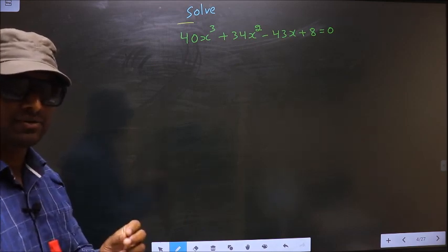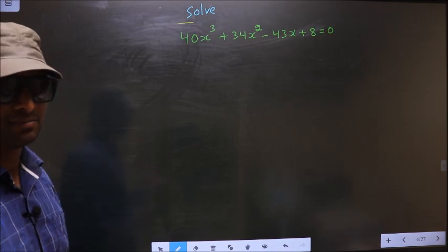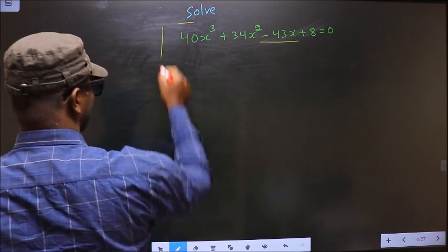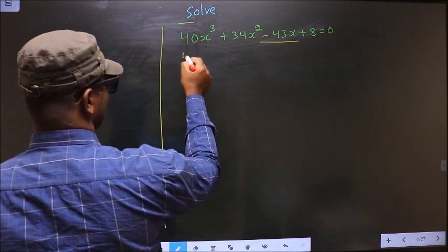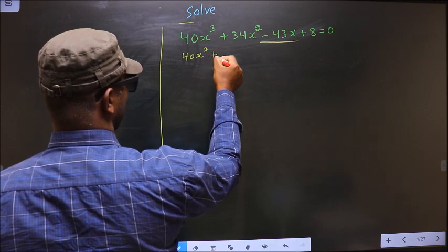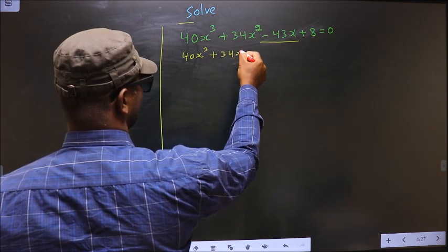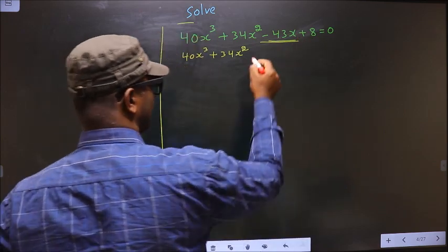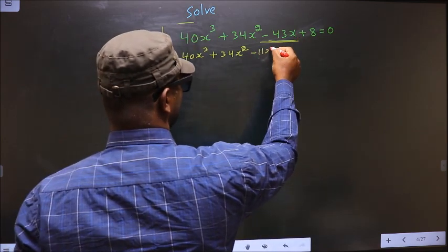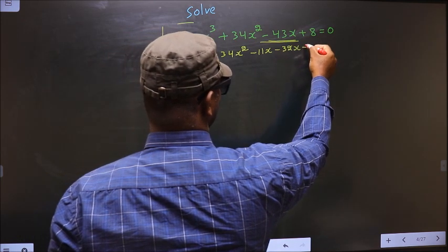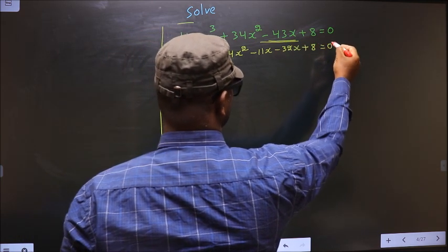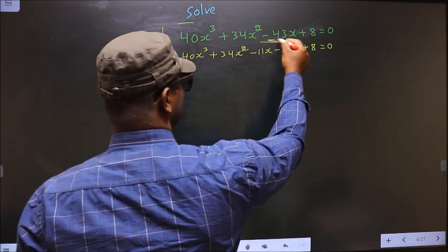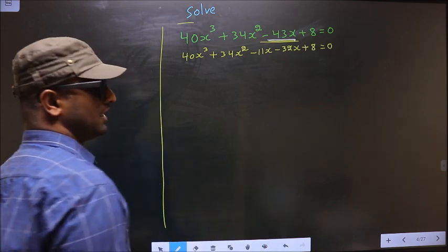For that we have to change the x term, that is minus 43x. So now 40x cube plus 34x square — in place of minus 43x I will write minus 11x minus 32x plus 8 equal to 0.